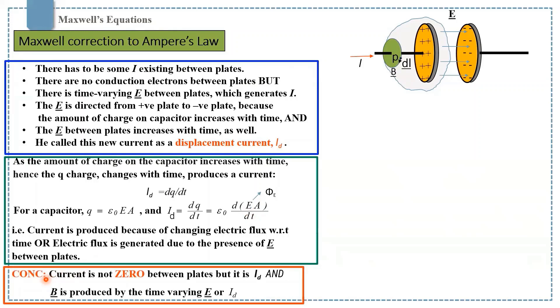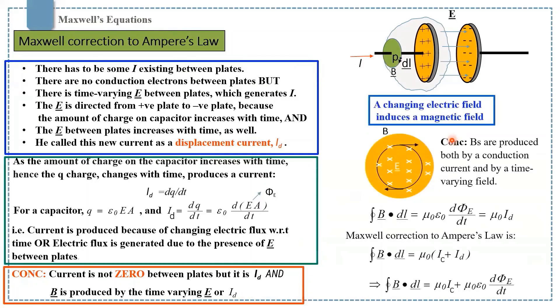Here is the conclusion: current is not zero between the plates, but it is displacement current. The second conclusion is magnetic field is also produced by time-varying electric field or a displacement current, because changing electric field induces magnetic field according to Faraday's law. So changing electric field can produce a magnetic field inside between the plates.